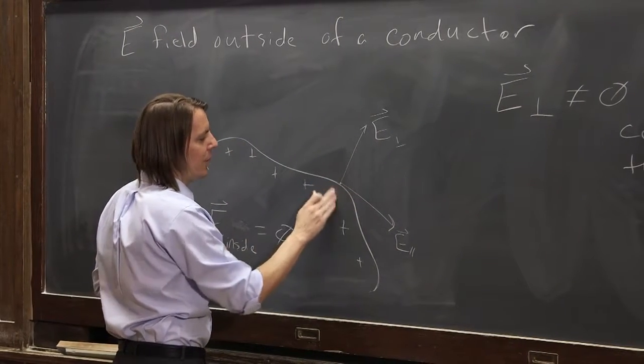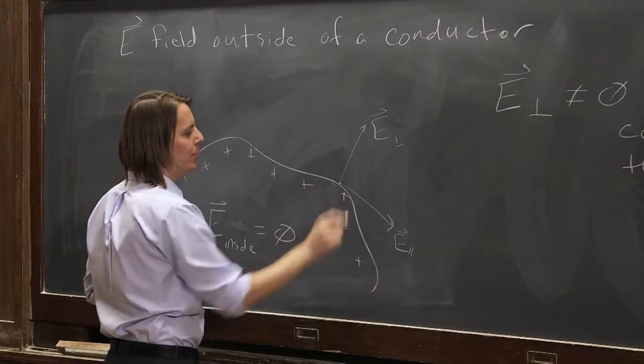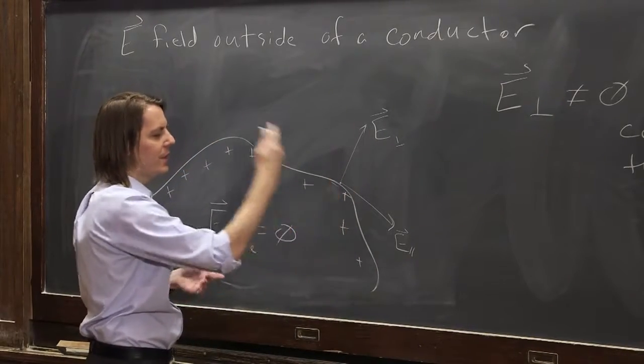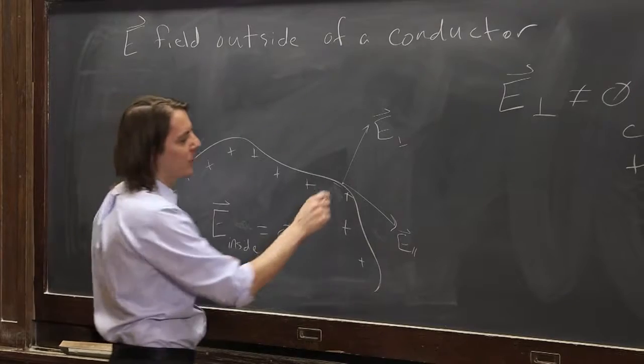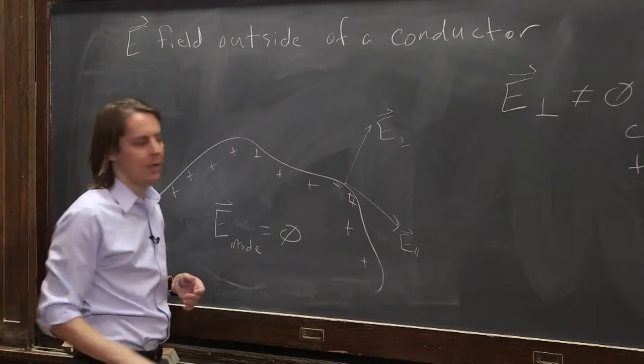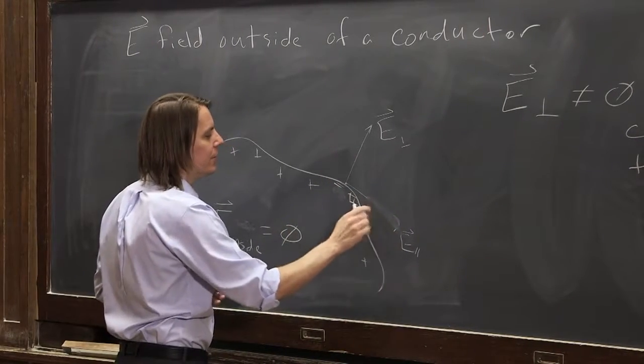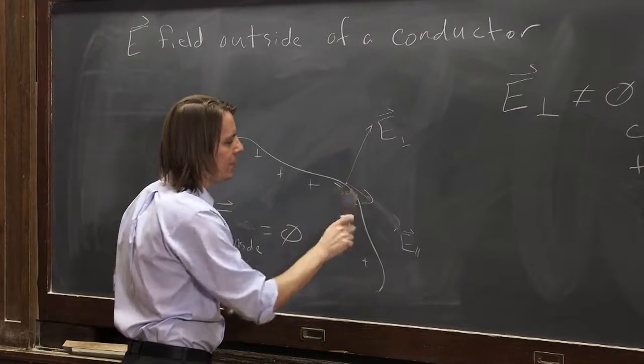Well, this positive would be pushed that way a little bit. It would leave it a little bit negative there. It would make a field that would cancel that field. And if it wasn't enough to cancel it, it would do it a little bit more.